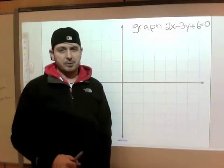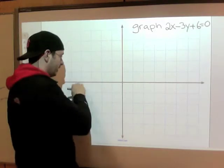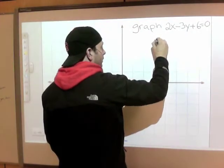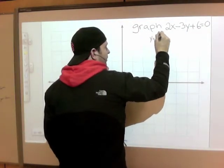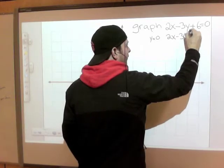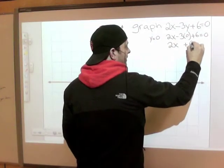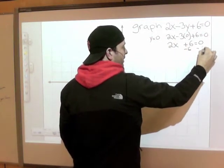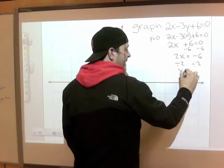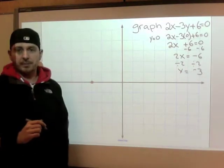How do you find intercepts? X-intercepts always have a y-height of 0, so we put y equals 0 into our equation. I'm going to put a 0 in for the y. Anything times 0 is 0, so I get 2x plus 6 equals 0. Subtract 6 from both sides — 2x equals negative 6. Divide both sides by 2 — x equals negative 3. So an x value of negative 3 is one of my intercepts.